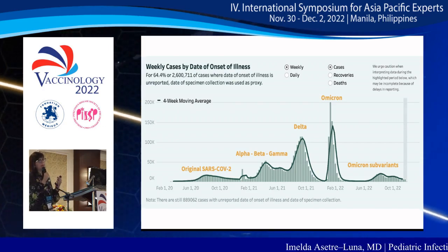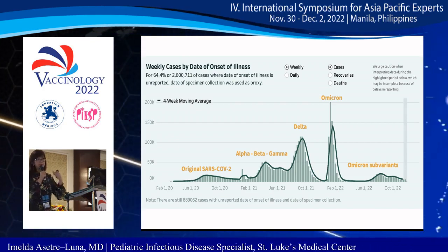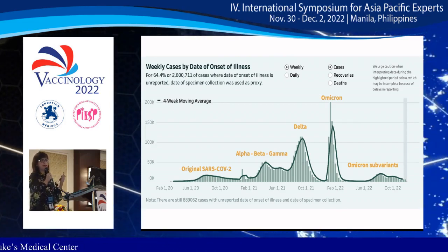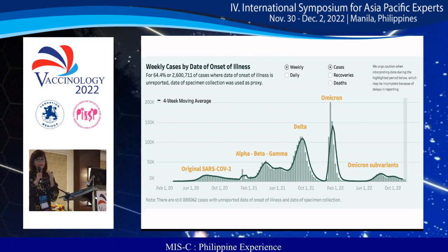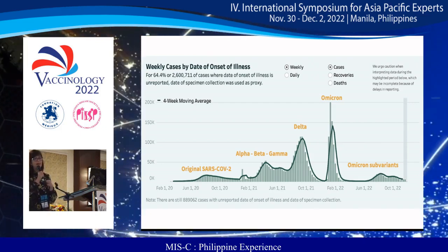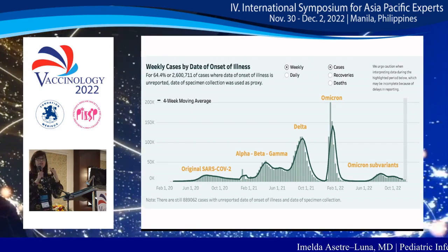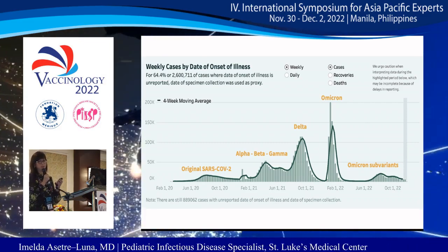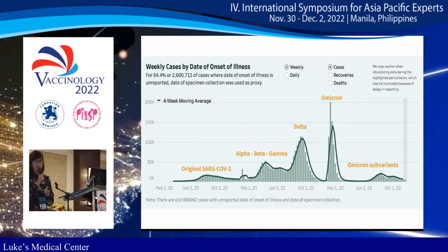During the first quarter of 2021, there was an increase in cases secondary to the alpha, beta, and gamma variants. In the middle of last year, another larger increase was due to the delta variant. In January 2022, a very sharp increase corresponded to the Omicron surge, and for the rest of the year we've been dealing with the different Omicron subvariants.